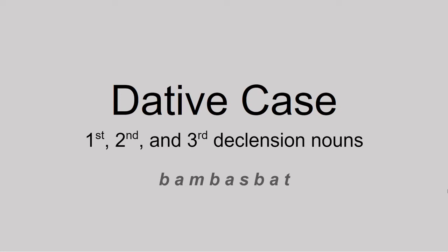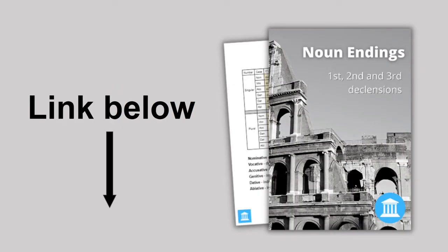Hi everyone, and welcome back to Bambas Bat. Before we start, I want to give you this one-page free cheat sheet for all the noun endings. It will really help you to get familiar with all the cases for the 1st, 2nd and 3rd declensions. There's a link in the description below — go and download it and have it to hand while you watch this video.